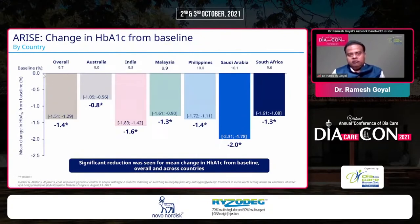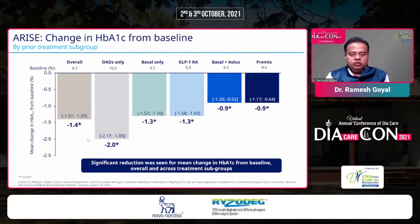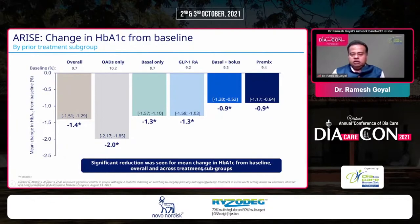Looking at the results — change in HbA1c from baseline: overall HbA1c reduction was 1.4%. In Indian patients it was 1.6%, and in Saudi Arabian patients it was 2%. Significant HbA1c reduction was seen across all six countries. By treatment subgroup, patients who were only on OADs and had Ryzodeg added achieved the maximum HbA1c reduction of 2%, with significant reductions also observed in patients switching from basal-bolus therapy.